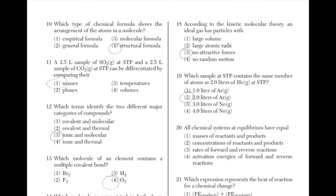All chemical systems at equilibrium have equal rates of forward and reverse reactions. You just have to remember that all chemical reactions at equilibrium will have equal rates of the forward and reverse reactions.